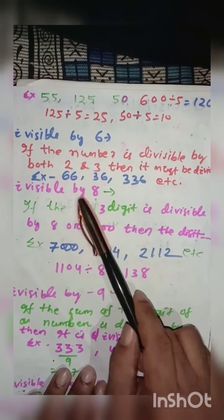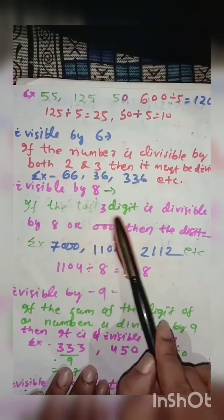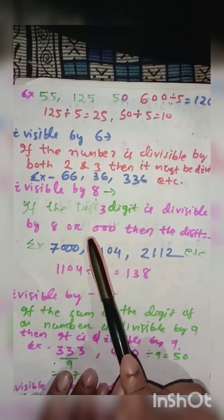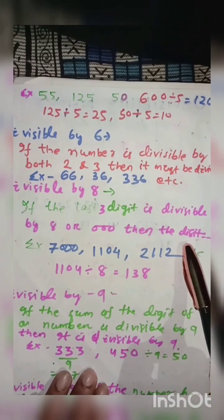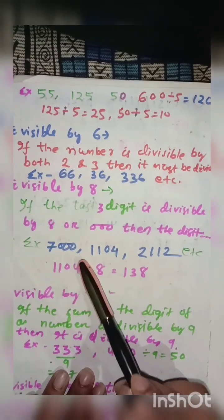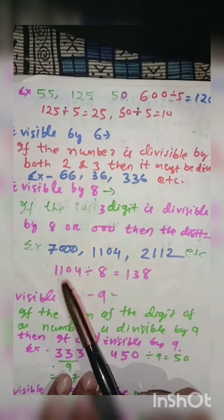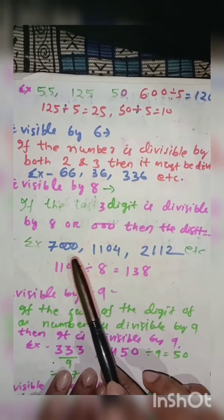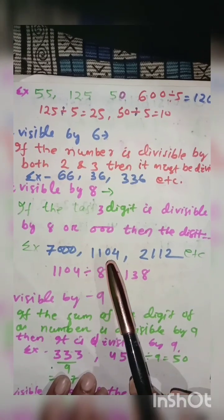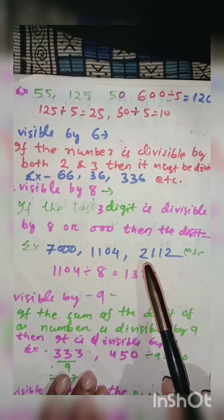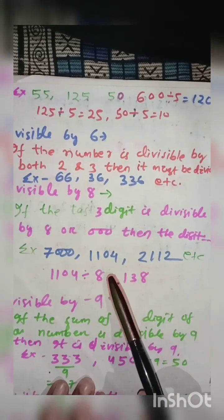Move on. Divisible by 8. If the last 3 digits are divisible by 8 or three 0s, then the digit is undoubtedly divided by 8. So this is the divisible property of 8. Here the examples are given: 7000, 1104, 2112. All are divisible by 8.